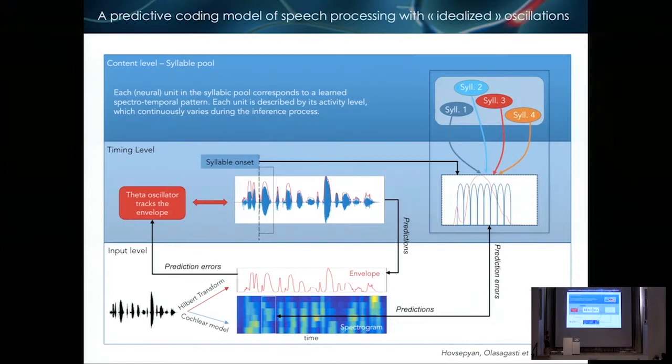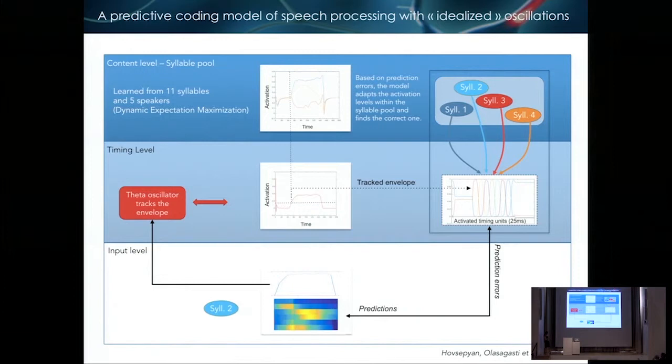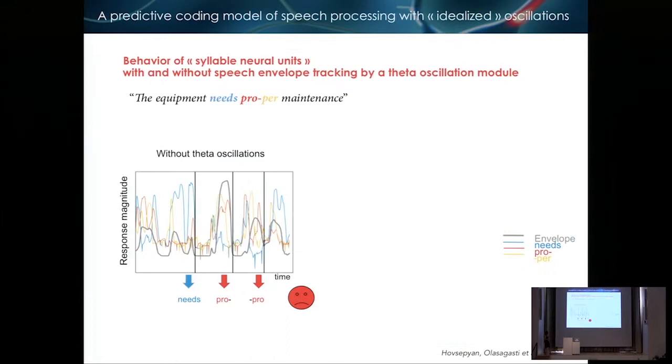We have a theta oscillator, but not the biophysical type, really some really stupid theta oscillator that tracks the envelope. And when the envelope reaches a certain threshold, then it starts the activity of timing units. And these timing units have a time constant of 25 milliseconds, which is our way to emulate the gamma activity. So there is no gamma oscillation in this model. It's just gamma by means of integration on the scale of 25 milliseconds. So with this series of timing units, there is encoding of syllables. And there is connection with a syllable pool, which we call the content level, where each unit corresponds to a learned spectrotemporal pattern.